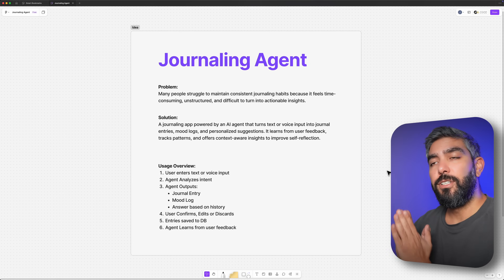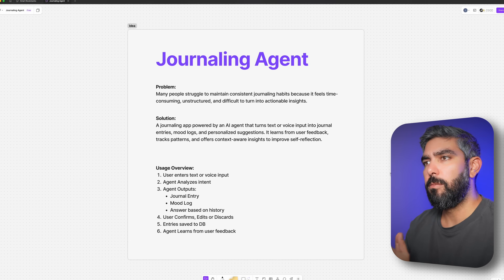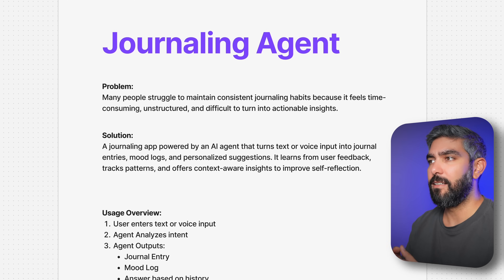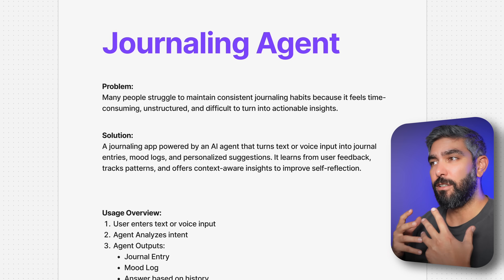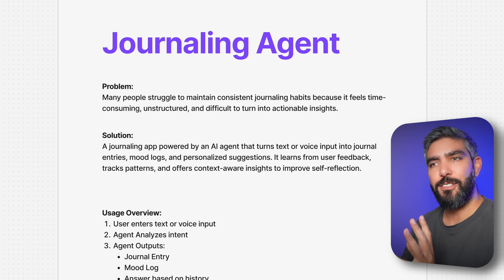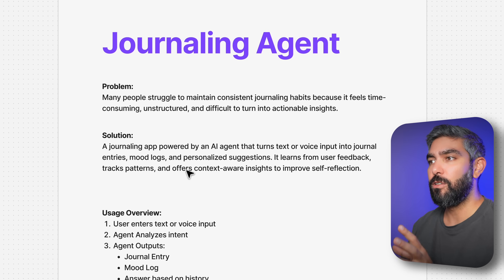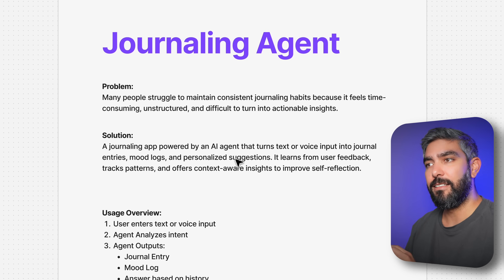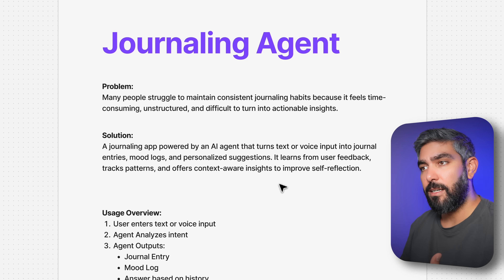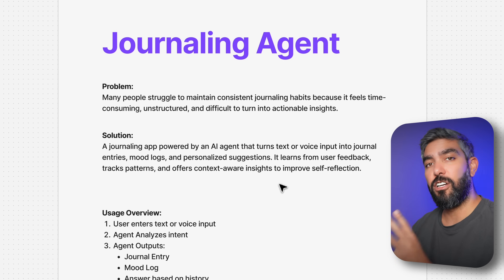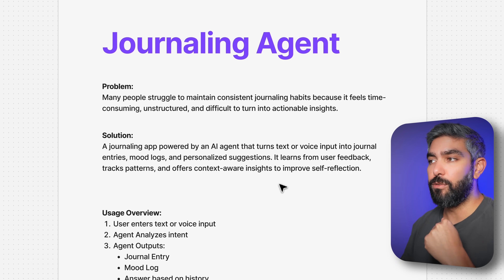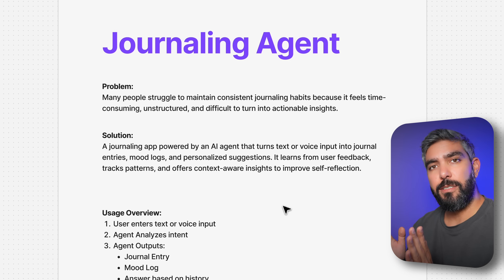To start any idea, you need to identify the problem you are solving for. The problem here is that many people struggle to maintain consistent journaling habits because it feels time-consuming, unstructured, and difficult to turn into actionable insights. The solution is a journaling app powered by an AI agent that turns text or voice input into journal entries, mood logs, and personalized suggestions. It learns from user feedback, tracks patterns, and offers context-aware insights to improve self-reflection.